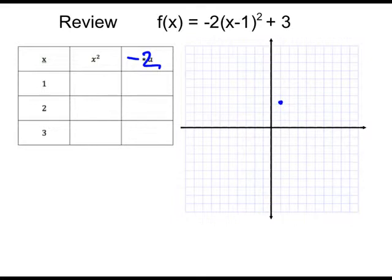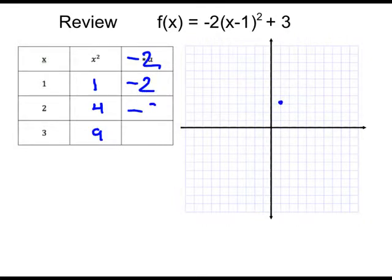So we pick three numbers: 1, 2, and 3. We square those, so we get 1, 4, and 9. And then we multiply by the a value, which is negative 2. 1 times negative 2 is negative 2 — this will create that vertical stretch. 4 times negative 2 is negative 8. 9 times negative 2 is negative 18.